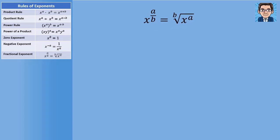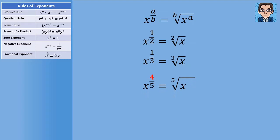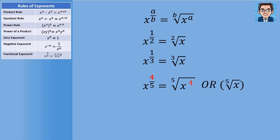The last rule addresses what we do when x is raised to a fraction. The numerator is the power and the denominator is the root. So x to the 1 half is the square root of x, and x to the 1 third is the cube root of x. When the numerator is not 1, there are two ways to handle it: we can put the numerator inside as the power — the 5th root of x to the 4th — or take the 5th root of x and raise the whole thing to the 4th. Both are equivalent; sometimes one form is easier to evaluate than the other.